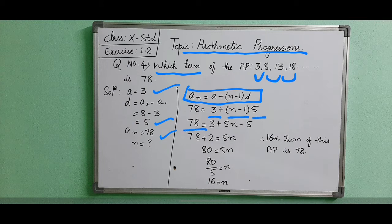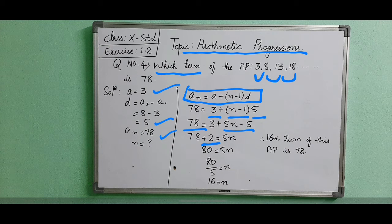78 equals 5n minus 2. When we shift this minus 2, it becomes plus 2. 78 plus 2 is 80.